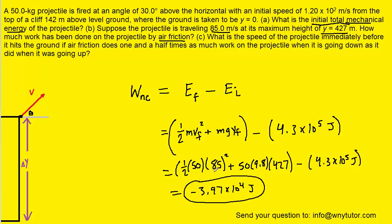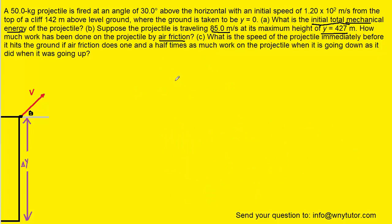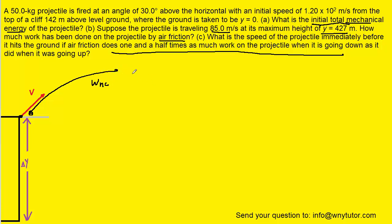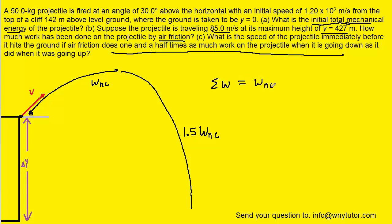This is how much work the non-conservative air friction force has done on the projectile. For part C, we are told that air friction does 1.5 times as much work on the way down as it did on the way up. So the total work is the non-conservative work done on the way up plus 1.5 times that on the way down. Since there's a coefficient of 1 going up, we can combine these into 2.5 times the non-conservative work.